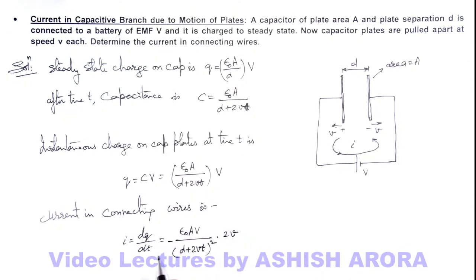So in this situation, the final result we are getting is minus of 2ε₀Av² divided by (d + 2vt)².